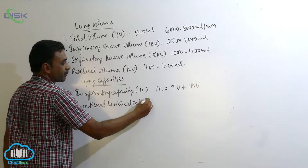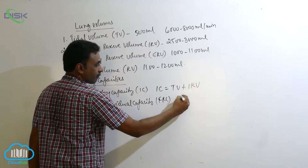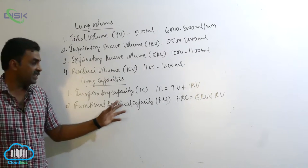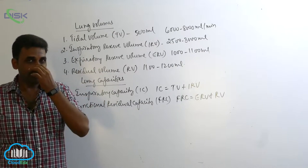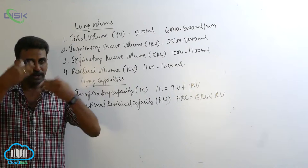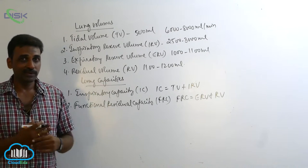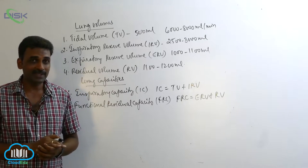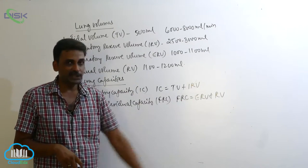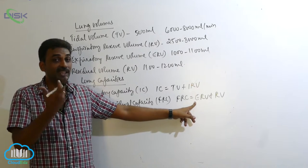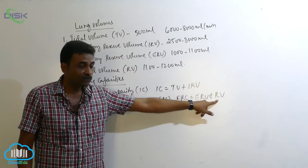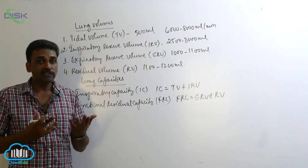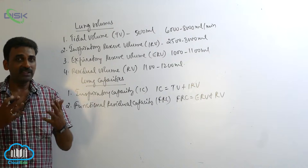Functional Residual Capacity. After normal expiration, during quiet breathing, the amount of air that is still left behind in the lungs is called functional residual capacity. It includes expiratory reserve volume plus residual volume. Expiratory reserve volume is the amount of air that a person can exhale by forceful expiration. Even after forceful expiration, some amount of air left behind in the lungs is called residual volume. So functional residual capacity is the amount of air left behind in the lungs after normal expiration.